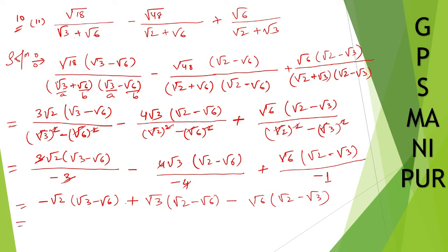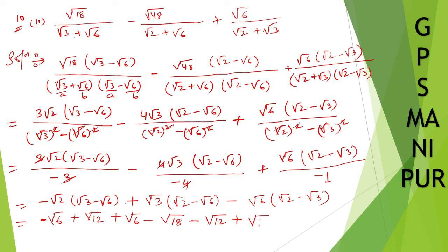Now let us multiply and find out. Root 2 into root 3 gives root 6. Minus into minus is plus root 2 into root 6, which is root 12. Plus root 3 into root 2 gives root 6. Plus into minus gives minus root 3 into root 6, which is root 18. Minus root 6 into root 2 gives root 12. Plus root 6 into root 3 gives root 18. Now: minus root 6 plus root 6 cancel; plus root 12 minus root 12 cancel; minus root 18 plus root 18 cancel. So the answer is 0. Thank you so much, we'll meet in the next video.